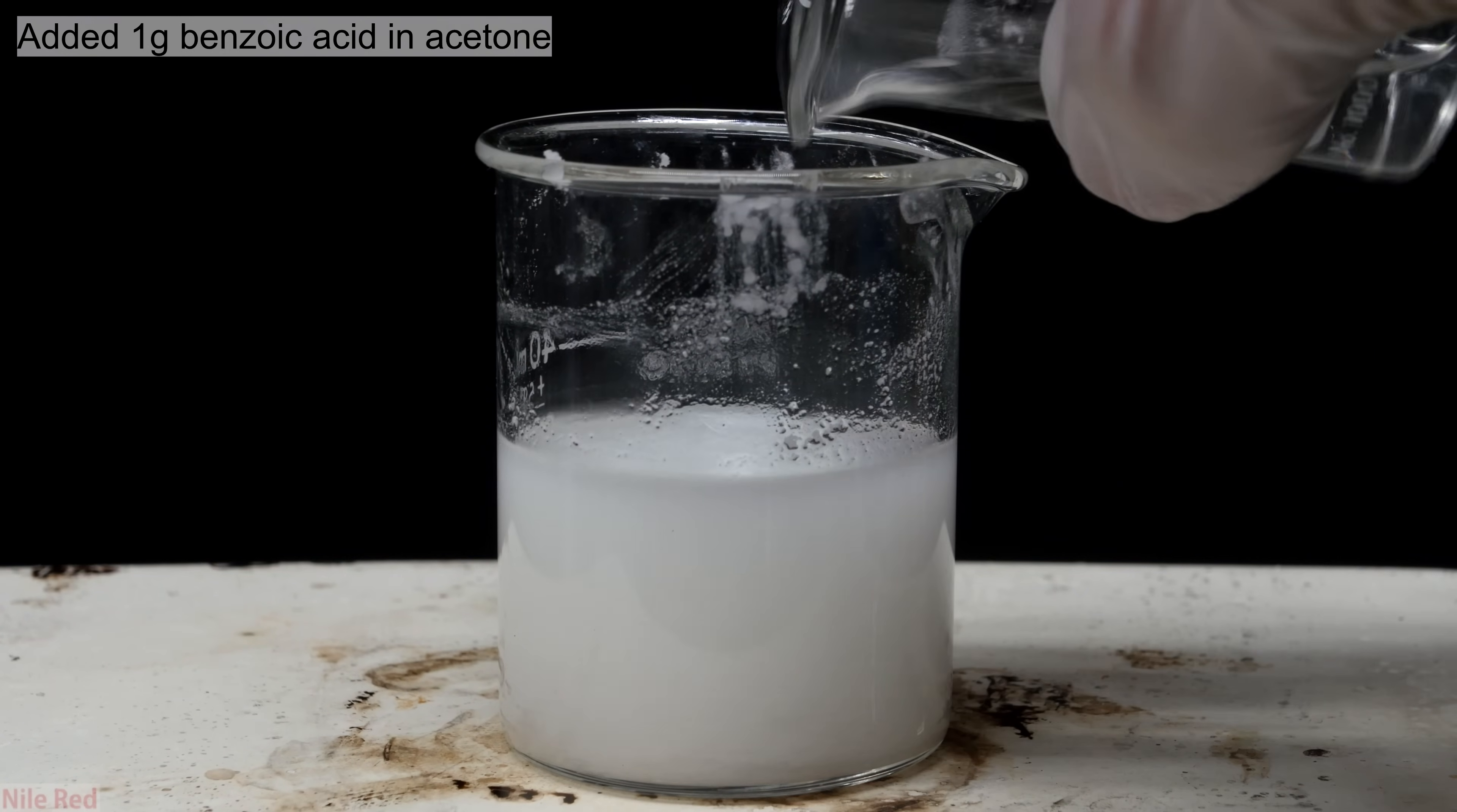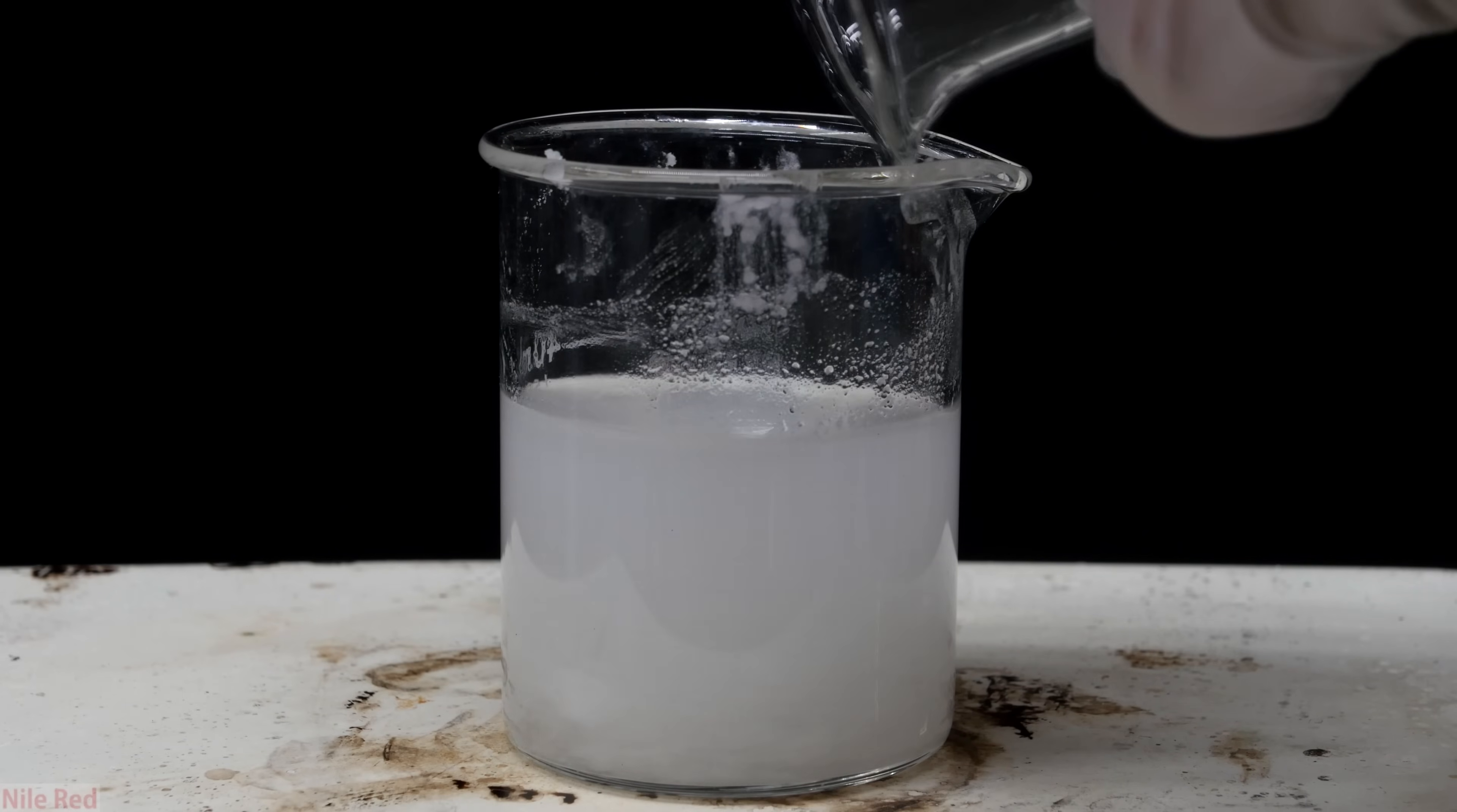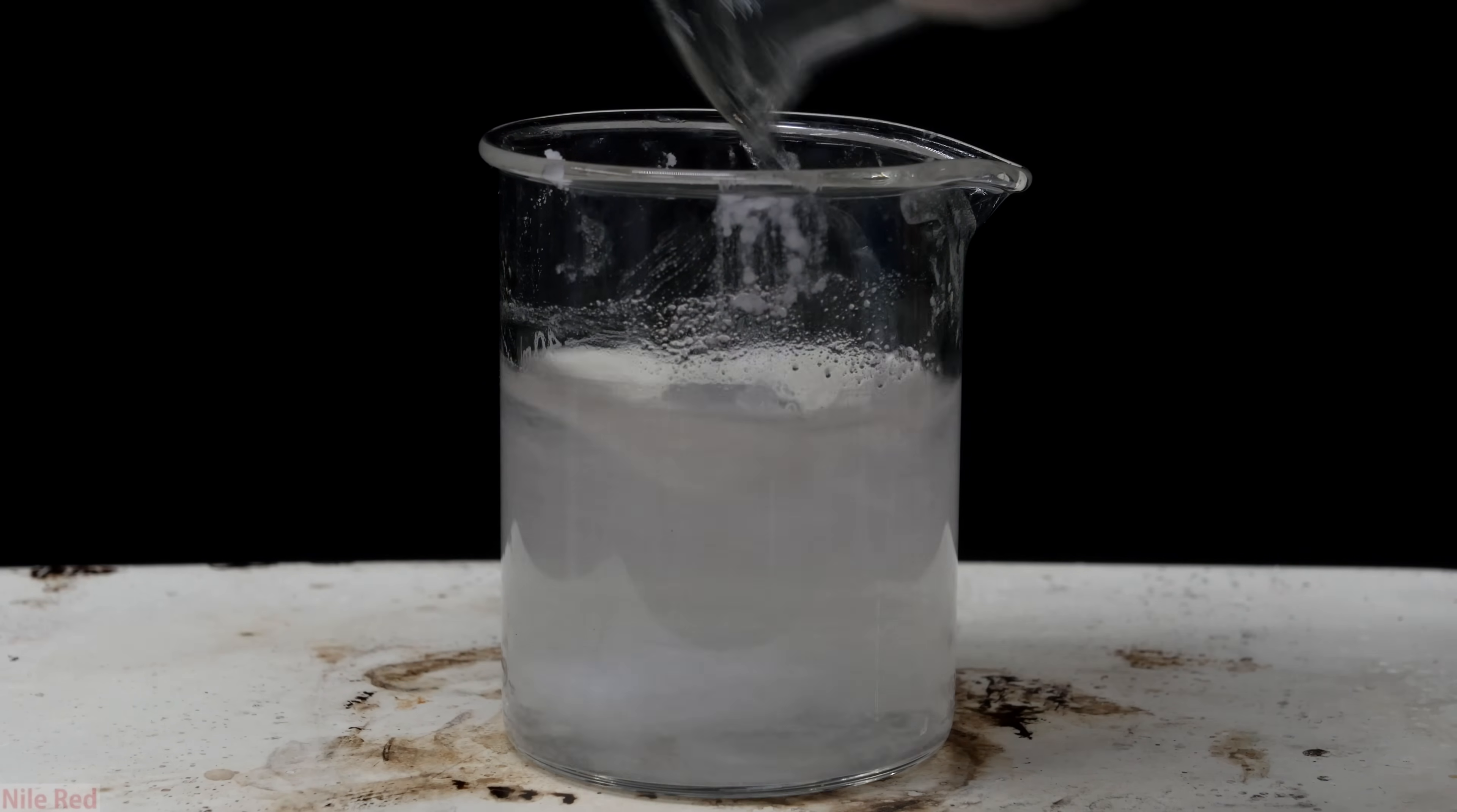With strong stirring, I added the benzoic acid to the denatonium hydroxide. A little bit of acetone was used to wash out any benzoic acid that might have remained in the beaker. What's interesting is that after it's added, it slowly starts to clear up. It doesn't clear up fully though, and it peaks out and then eventually starts to get cloudy again.